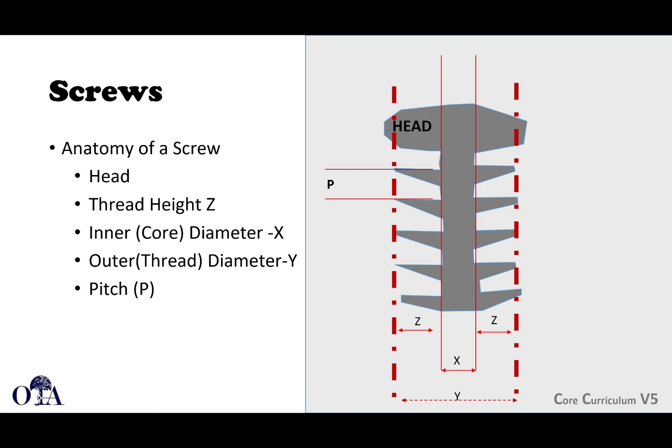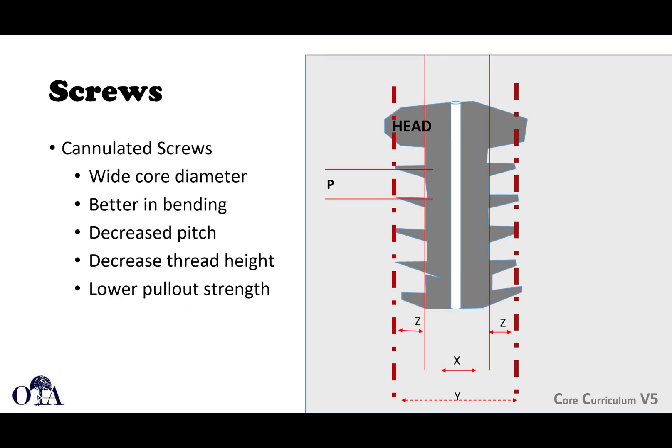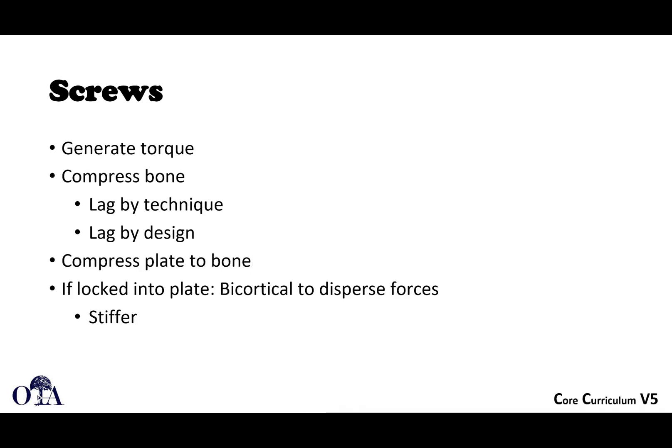The pitch is the distance between threads and varies depending on the type of screw. A cortical screw has a smaller pitch and smaller thread height. Cancellous screws have a larger pitch, larger thread height, and smaller core diameter. Cannulated screws have a wide core diameter to improve bending resistance, but have a decreased pitch and slightly lower pullout strength.